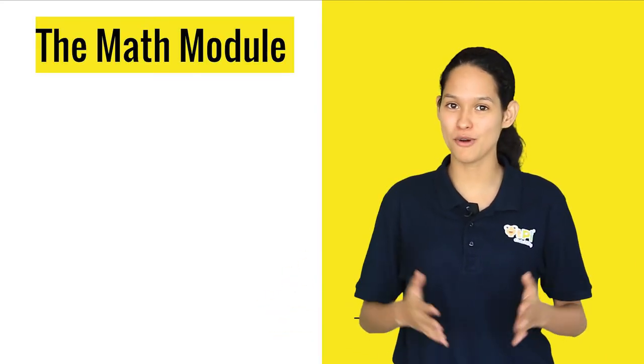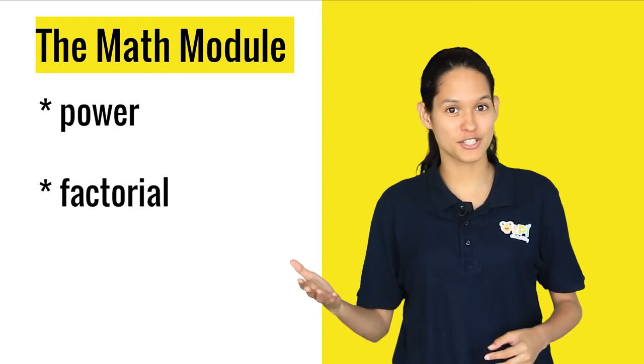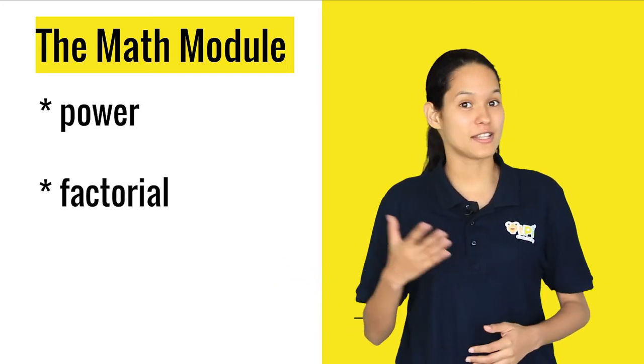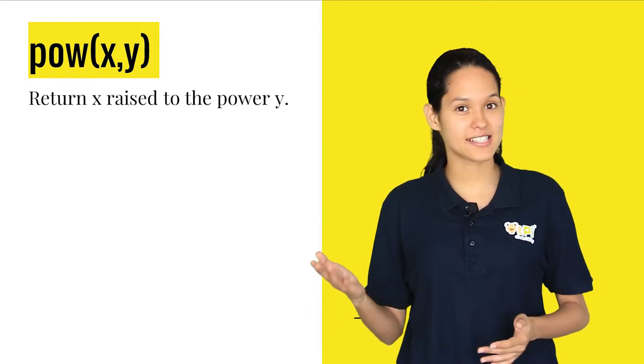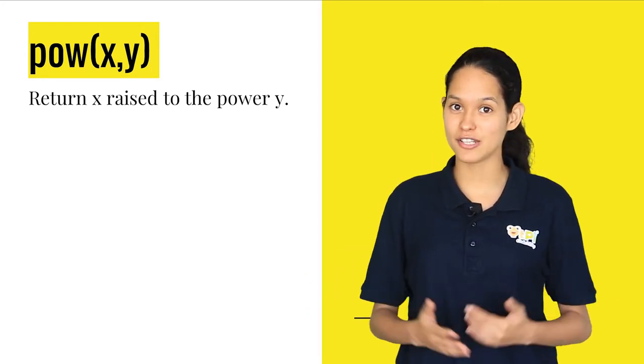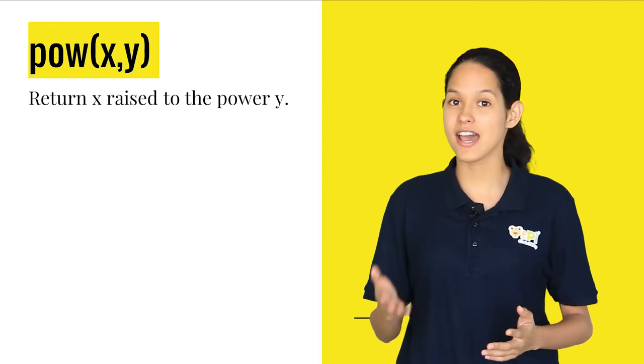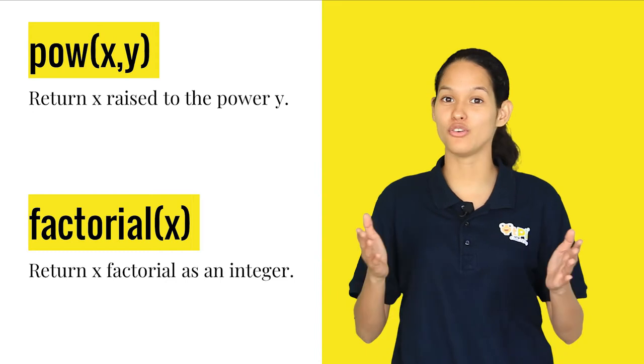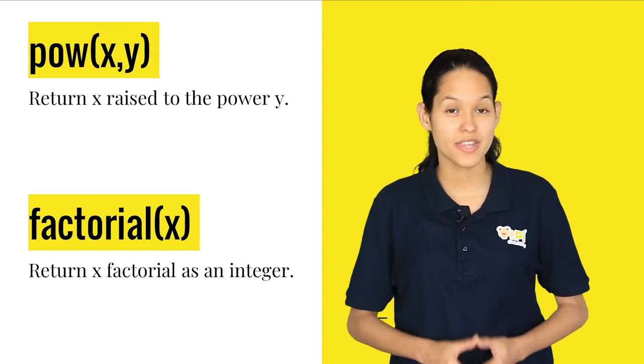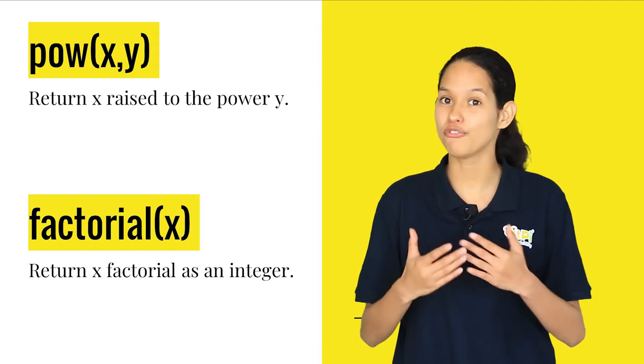Now, let's take a look at a few more math functions: the power function and the factorial function. In the power function, you have to pass two values, the x and y values. It returns an integer value by evaluating x raised to the power y. In the factorial function, you have to pass an integer value. It returns the factorial of that number.